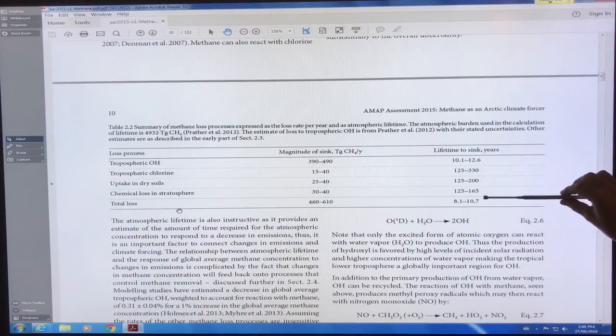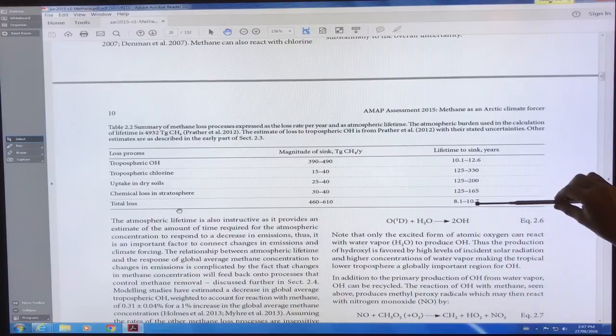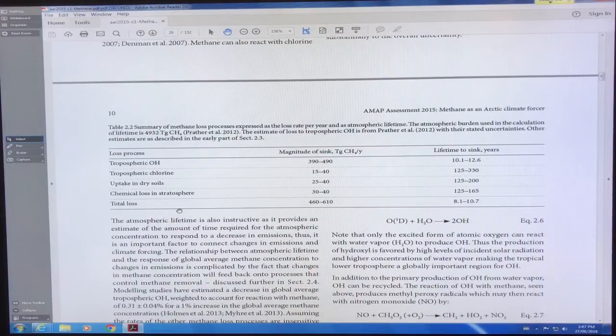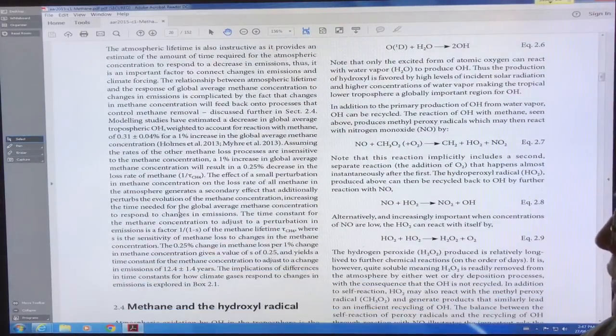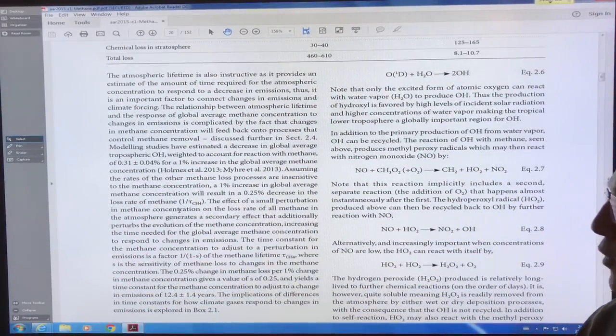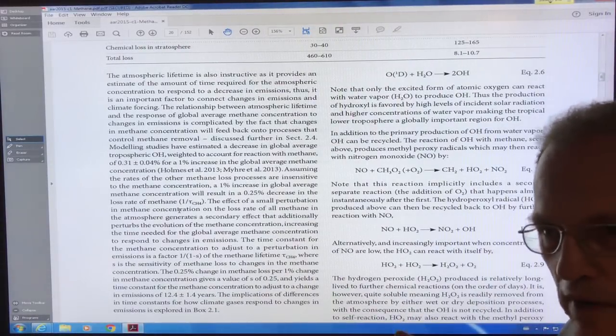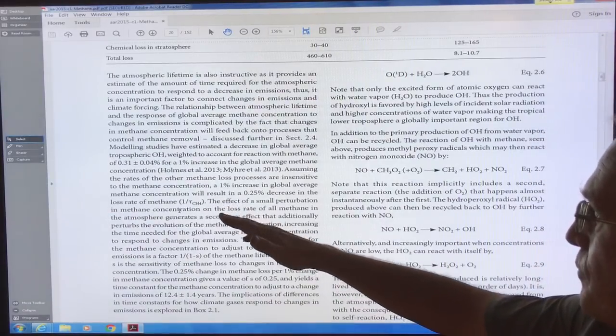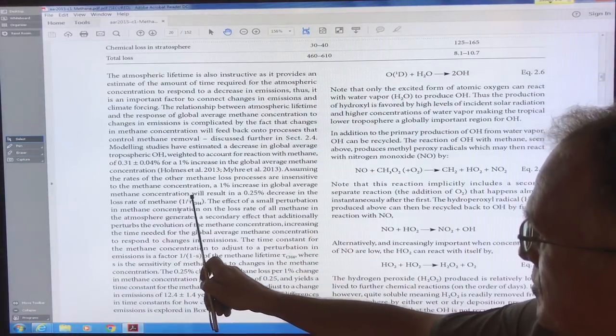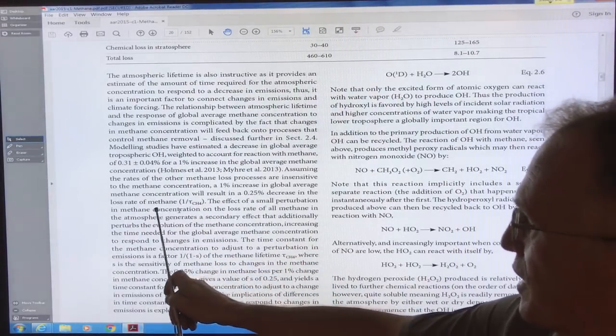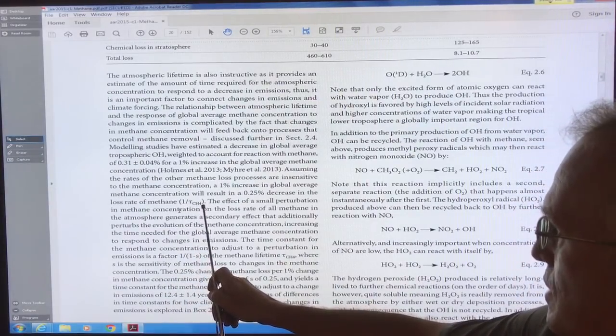Combining the lifetimes, you get the 9.1 basically plus or minus 0.9. Actually, this range is slightly bigger than that. So this is how long it takes for the methane to come out. And that lifetime changes slightly with the concentration, because the rates of the reactions that remove it change. The loss rate is 1 over the lifetime.